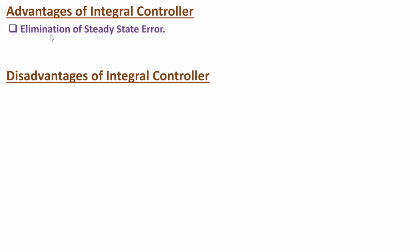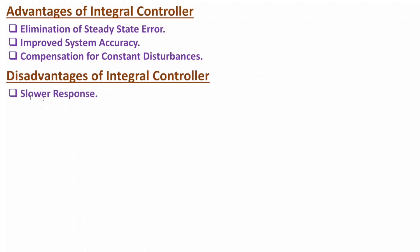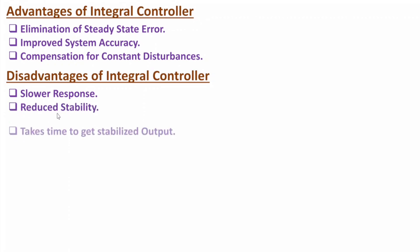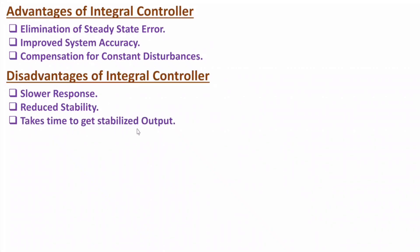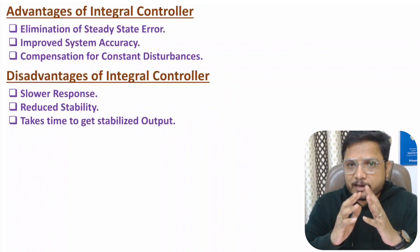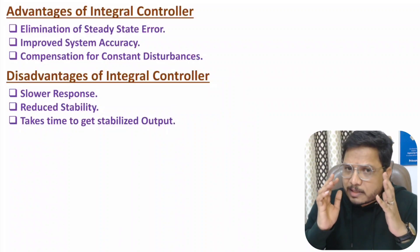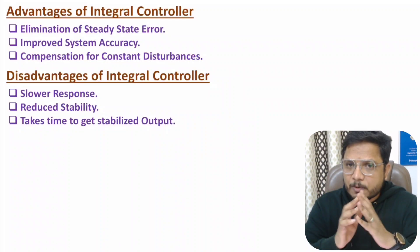The advantages of the integral controller are: no steady state error, improved system accuracy, and compensation for constant disturbances. The disadvantages are: slower response, reduced stability due to the additional pole, and it takes time to get a stabilized output. I hope you have enjoyed this session — if any confusion remains, paste it in the comment section. Thank you for watching.